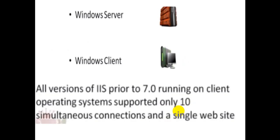Before IIS 7.0, in Windows Server 2008 we are using versions 7.0 and 7.5. Before IIS 7, on the client operating system it supported only 10 simultaneous connections and a single website only — meaning if one application was created, at the same time only 10 users could connect to that single website.